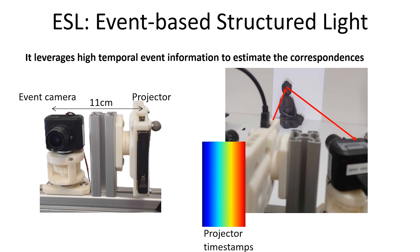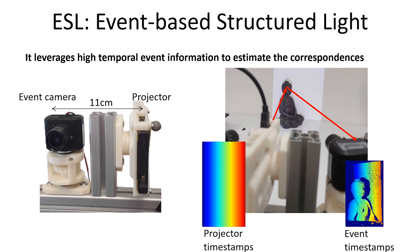Similarly for the event camera, we can define another time map which records the timestamp of the last event at the pixel location. The time maps for the projector and the event camera during one scan pass of 16 milliseconds are visualized here, colored from blue past to red present.